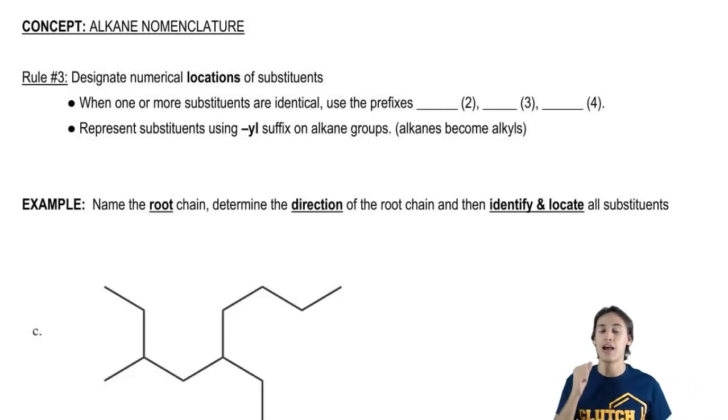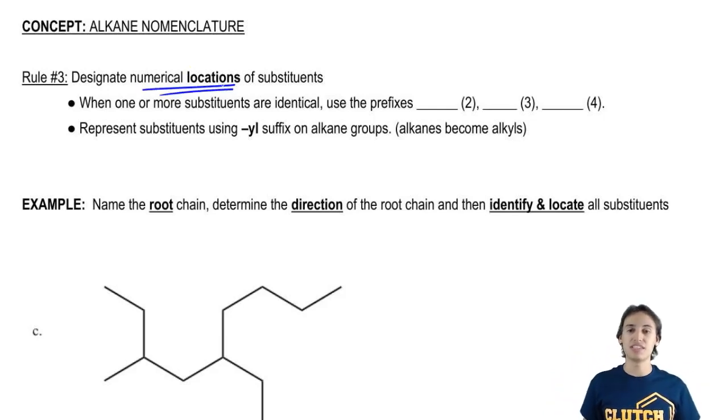Rule number three, this is after we've already identified the longest chain and the direction of that chain, rule number three is to designate numerical locations of substituents. So what that means is that I'm going to want to actually say, okay, is this substituent on two or is it on three?